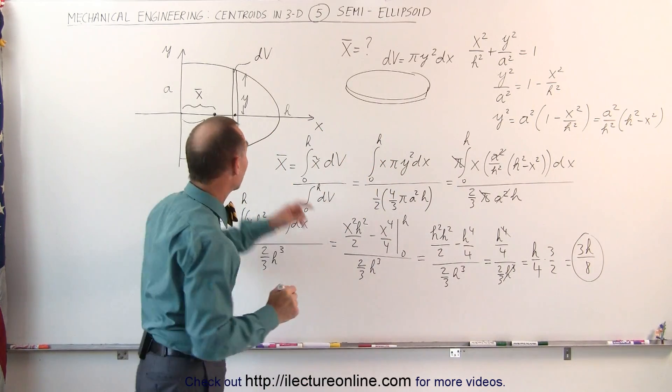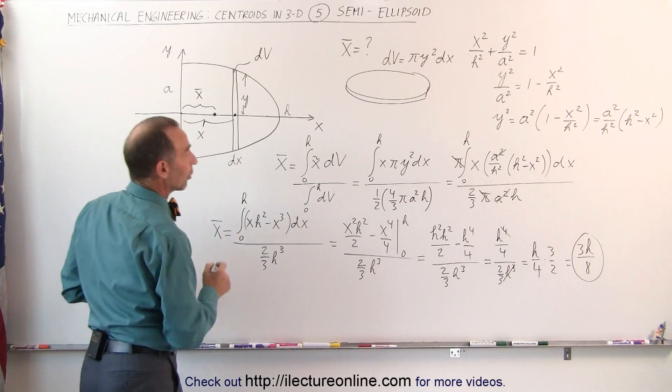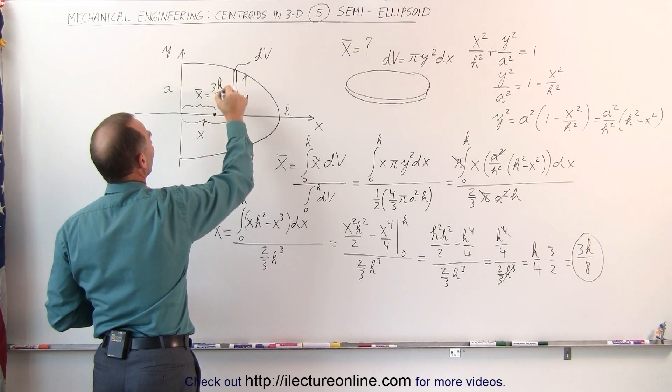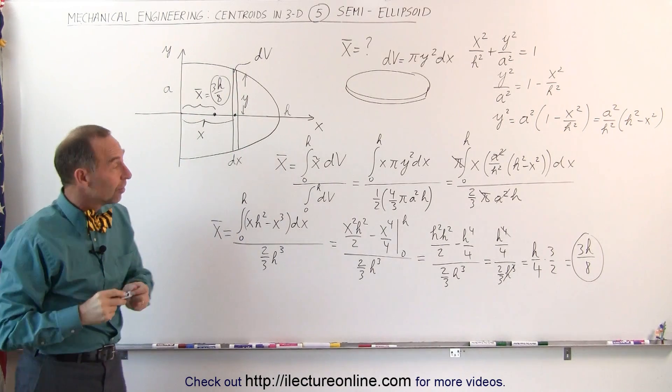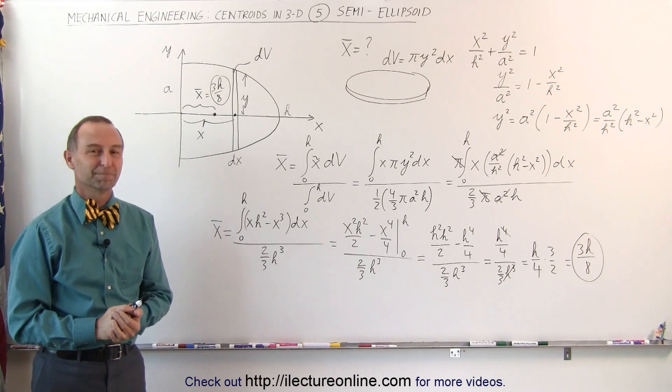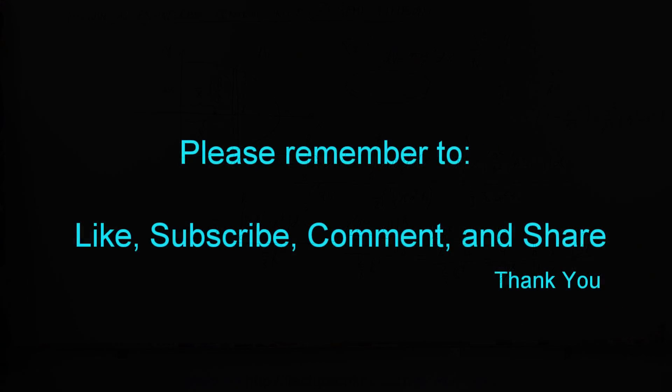That is the distance from the center, from the origin here, to the centroid of that semi-ellipsoid. So this here is equal to 3h/8. That's the answer we were looking for. That is the x-coordinate of the centroid of a semi-ellipsoid. And that's how it's done.